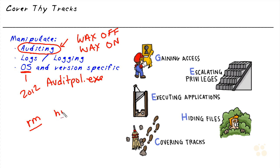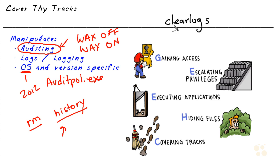If there's some type of a history file — for example, with a bash shell on Linux — we could go ahead and delete that history file in an attempt to cover the tracks of what we've done. There are lots of other utilities we can use depending on the operating system. One of the tools is called clearlogs.exe on a Windows system. And as part of the Metasploit framework, there's also the meterpreter that we could use to go in and clear log files from a system.